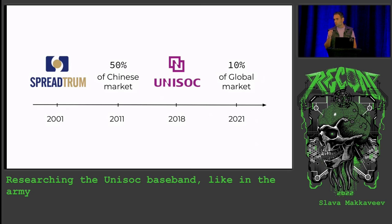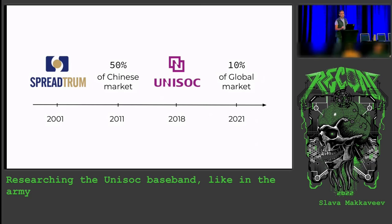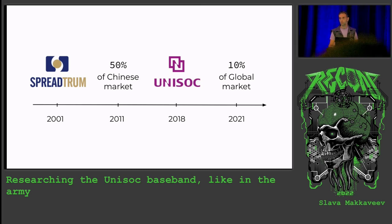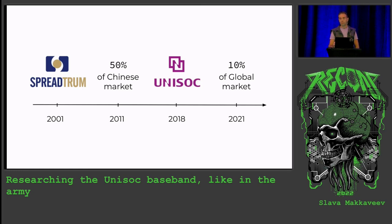Many push-button phones which we used 15 years ago were based on a chip from Spreadtrum, a Chinese chip manufacturer founded in 2001. In those days the manufacturer was very popular. In 2011, more than half of all Chinese phones were based on chips from Spreadtrum. Later, in 2018, there was a rebranding and Spreadtrum became known as Unisoc. Nowadays, the chip manufacturer produces 5G chips which power 2G, 4G, 3G, and 5G devices ranging from smartphones to smart TVs. And by the end of 2021, about 10 or even 11% of all smartphones in the world are based on Unisoc chipsets.